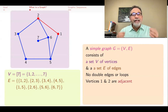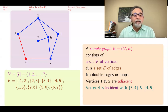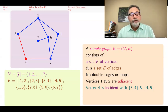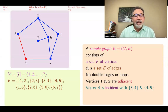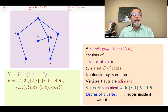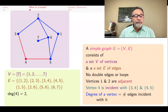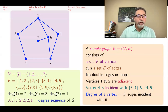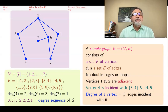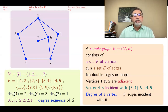When there is an edge connecting two vertices, we say those vertices are adjacent. We also say a vertex is incident with an edge when it is one of the two endpoints of that edge — for example, vertex 4 is incident with edges {3,4} and {4,5}. The degree of a vertex is the number of edges incident with it. So in this graph, the degree of 4 is 2, the degree of 6 is 3, and the degree of 7 is 1.